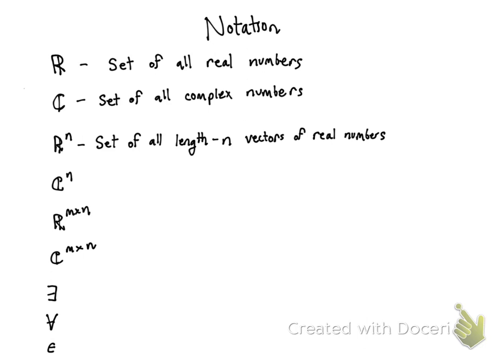So Cⁿ is just like Rⁿ, the set of all length-n vectors with complex entries. So I'll go ahead and write that. So when we talk about Rᵐˣⁿ, this is a set, this is a matrix. And I'll go into more details about this in a bit.